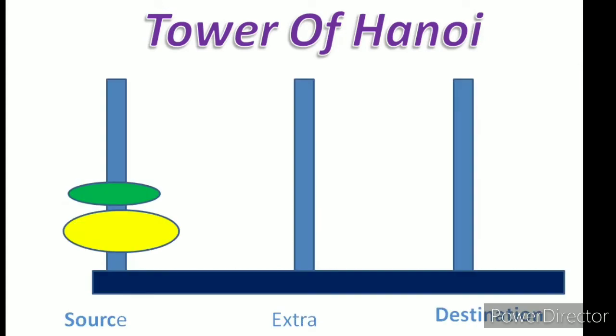As you can see in the picture, there are three poles given and those poles are source, extra and destination. As you can see there are two plates or you can say there are two disks in source pole and those two disks we have to transfer to destination pole and some rules are applied. So let us see in detail.